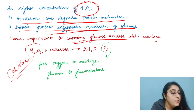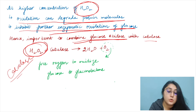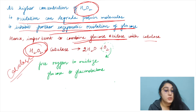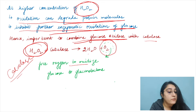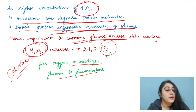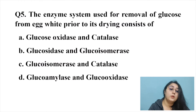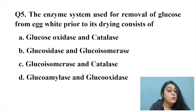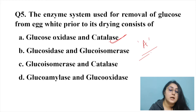To solve the H2O2 problem, catalase is combined with glucose oxidase. Catalase converts hydrogen peroxide to water and oxygen. The free oxygen generated is then available to oxidize remaining glucose to gluconolactone. Therefore the correct answer is glucose oxidase and catalase — option A.